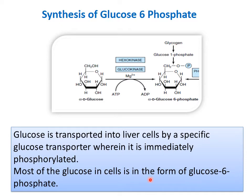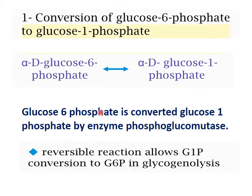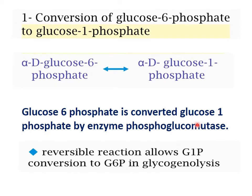Most of the glucose in the cell is in the form of glucose-6-phosphate. The next step is conversion of glucose-6-phosphate into glucose-1-phosphate. The phosphate changes its position from carbon 6 to carbon 1. Since a positional change of a substituent takes place, the enzyme involved is a mutase or epimerase. The enzyme here is phosphoglucomutase, and this reaction is reversible.